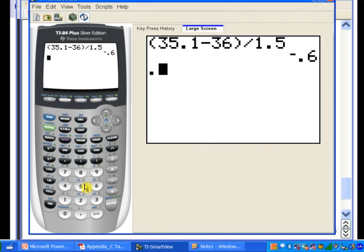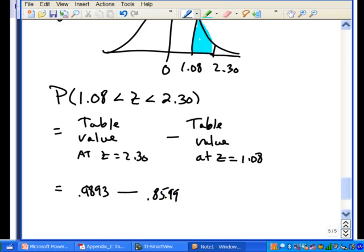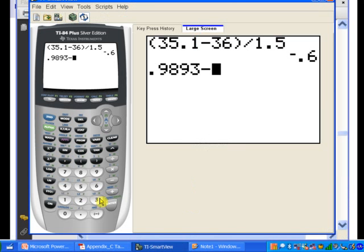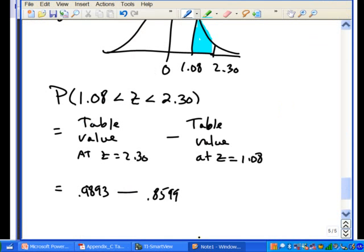And now it's just a matter of subtracting the two values now. So we have 0.9893 minus the value at the other z-score which is 0.8599, and so if we compute that we end up with 0.1294, about 13% of the area.